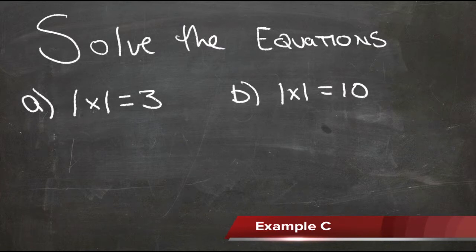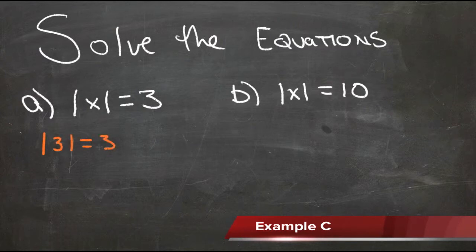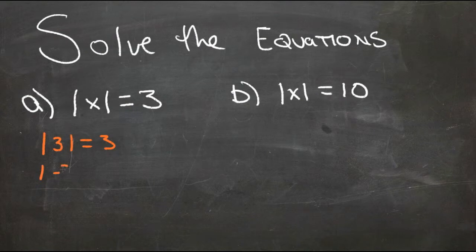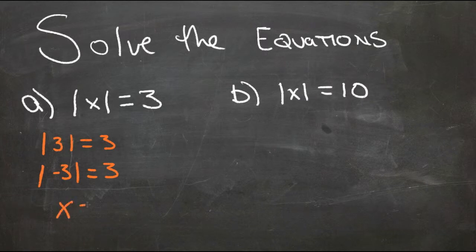X could either be 3, since the absolute value of 3 is 3, or x could be negative 3, because the absolute value of negative 3 is also 3. So x could be the set that includes negative 3 or 3.